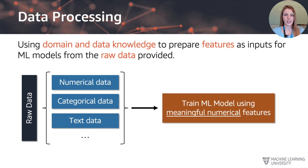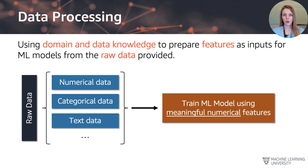What does it mean to prepare data for a machine learning model? It's all about using domain and data knowledge to get the data into a numerical format based on the raw data provided. Raw data can be a composition of numerical data, categorical data, text data, and potentially even image data. For a machine learning model, we generally need to provide numerical features, so when data is not already in numerical format, we need to prepare it before serving it to the model for training.